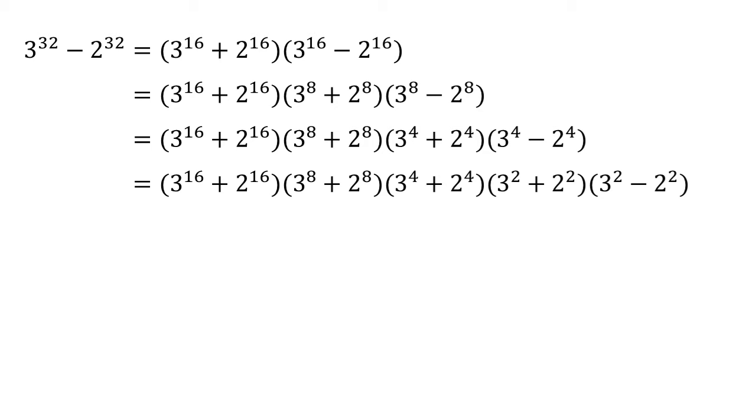Now we can do the same thing again to 3 squared minus 2 squared. But at this point the numbers are low enough, it's quite simple to work them out now. 3 squared minus 2 squared is 9 minus 4, so that last bracket is 5. 3 squared plus 2 squared is 13.